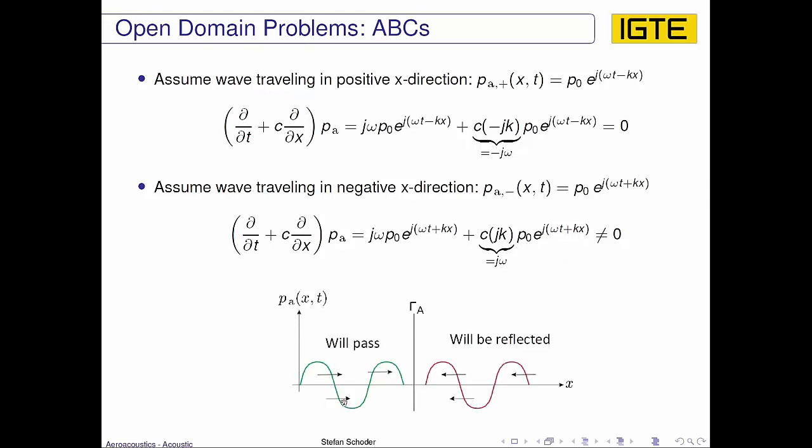Which means that the green wave traveling in the positive direction will pass this interface. This is what we would like to show, and by setting this characteristic on the boundary condition, we can satisfy this. And this is the ABC.